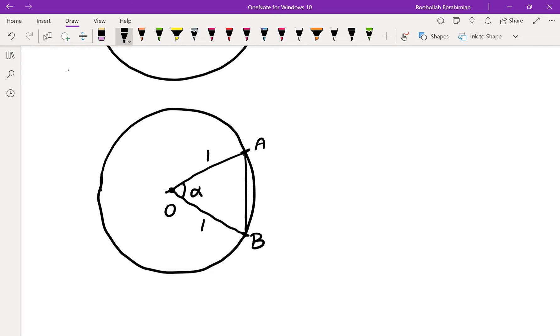The length of the chord can be found using this angle. If this angle is alpha, we can drop a perpendicular from the center and this would be the midpoint. AM becomes sine of alpha over 2. So AB becomes twice sine of alpha over 2.